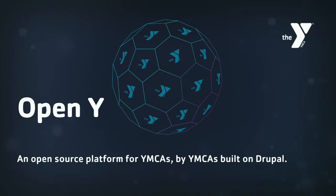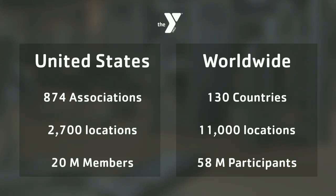Today we're going to talk about OpenY and federated distributions. OpenY is an open source platform for YMCAs by YMCAs, built on Drupal. The YMCA operates 874 independent associations in the United States with 2,700 locations servicing 20 million members — each with its own website and technology. That's 800 associations with 900 different websites.